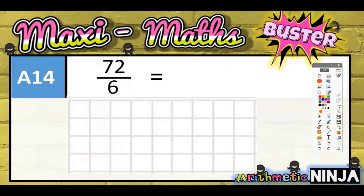Question 14: 72 divided by 6. This is where you just need to know your six times table. If you know your six times table, you're going to straight away know that the answer is 12. If you don't know your six times table, make sure you try and learn it soon.